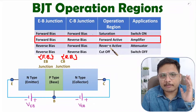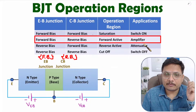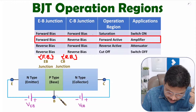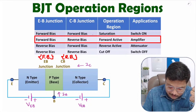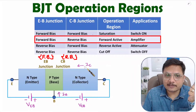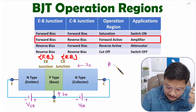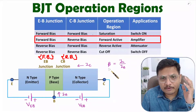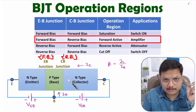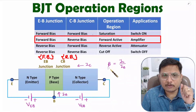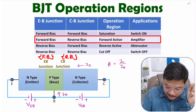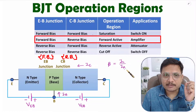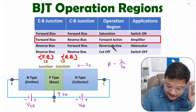In the forward active region, the majority of applications are available. For example, we can use BJT as an amplifier. Based on base current IB, the collector current IC will be amplified. Whatever IB is, IC will increase in proportion — IC equals beta times IB, where beta is the current gain. Beta could be 50, 100, or even 1000, depending on the manufacturing of the BJT. Collector current increases in direct proportion to base current, which is how we use forward active region as an amplifier.